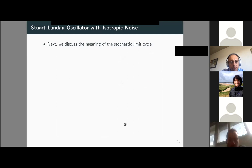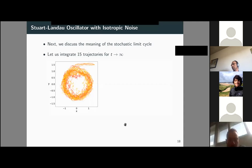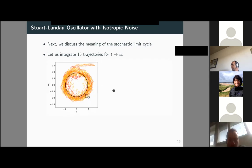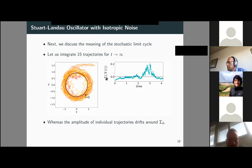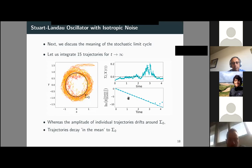To illustrate the meaning of the stochastic limit cycle, I take a large number of trajectories (15 for illustration), all starting from the same point and integrated for a long time. I then overlay the zero isostable — the candidate limit cycle — and you can see it captures a kind of mean rotation: some trajectories complete the rotation outward, others inward. Individual amplitude trajectories drift around zero, but the mean of many trajectories decays exponentially towards this curve.